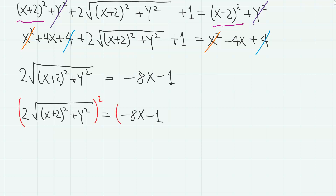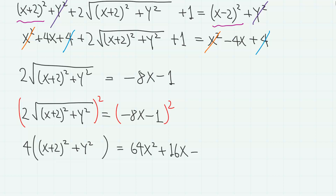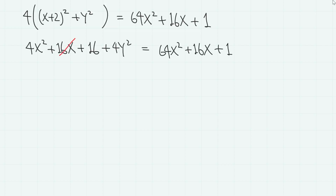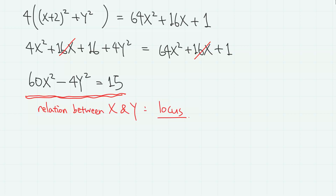The x squared and 4 terms cancel out, leaving 2 times square root of x plus 2 squared plus y squared equals minus 8x minus 1. Squaring both sides again to remove all radicals gives 4 times x plus 2 squared plus y squared equals 64x squared plus 16x plus 1. Expanding and cancelling 16x, we obtain 60x squared minus 4y squared equals 15, the simplified expression for the locus.